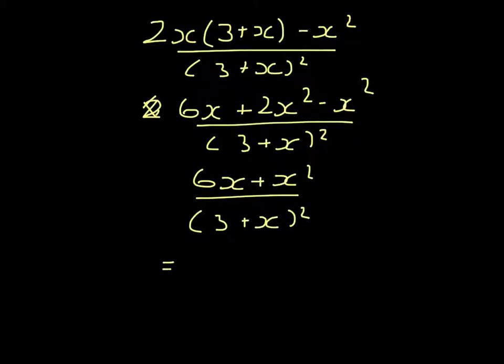And then factorizing just to check that there are no common factors. We have X upon 6 plus X all over 3 plus X all squared.